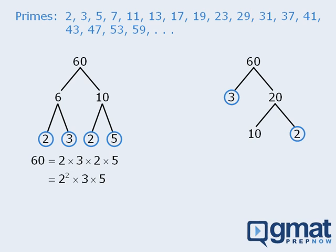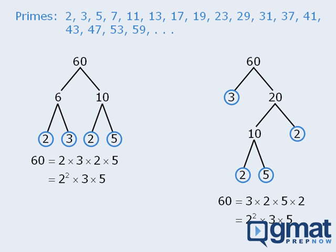10 is not prime, so we can rewrite it as the product of two numbers: 2 and 5. Since 2 and 5 are both prime, we'll circle them. We've now reached the ends of our branches, and we can see that 60 equals the product of the numbers at the ends of the branches. Notice that this product is the same as the product we got from the first attempt. Finding the prime factorization of a number is a very useful technique, so be sure to practice it on several large numbers.